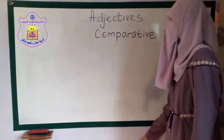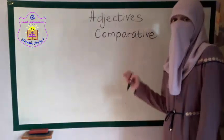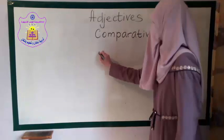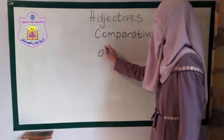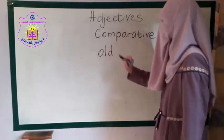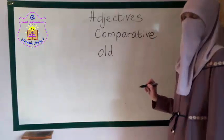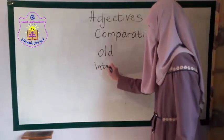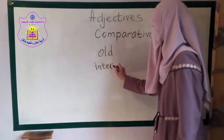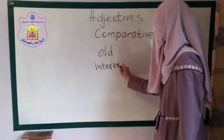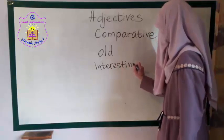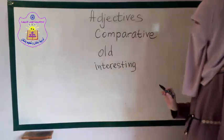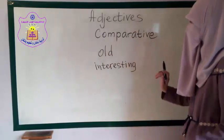Now, there are three forms of adjectives. The basic form — like 'old' (qadeem in Arabic), or like 'interesting' (yutheer al-ehtimam).